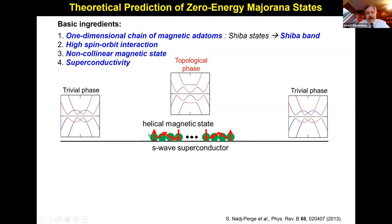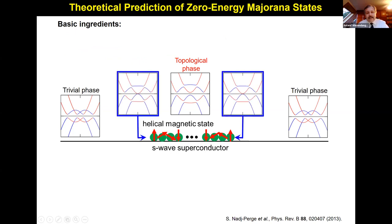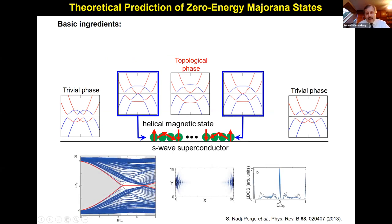The basic physics: you start with a single magnetic impurity interacting with an S-wave superconductor, then build a one-dimensional chain to hybridize the Shiba states of individual atoms and form a one-dimensional Shiba band. High spin-orbit interaction is needed, provided by the appropriate superconducting substrate. A magnetic state is needed — a helical magnetic state was assumed early on; later it was shown a ferromagnetic state combined with high spin-orbit coupling is sufficient. Under favorable conditions, we can induce a topological superconducting phase in the chain, and as boundaries of this phase we expect zero energy modes.